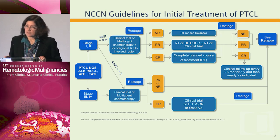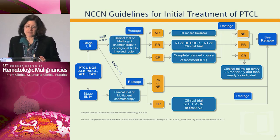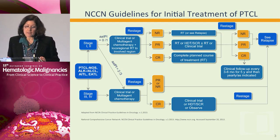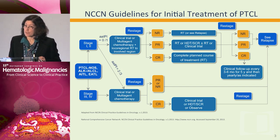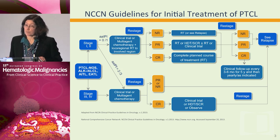In terms of the overview for aggressive T-cell lymphomas, the NCCN guidelines in the United States make a distinction for patients who have a low IPI as well as early stage disease. Those patients can be treated effectively with chemotherapy and involved field radiotherapy if appropriate.